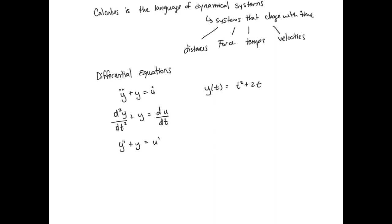If we evaluate this for a specific moment in time, we'd have something like y(1) = 1² + 2×1, so y equals 3 when time equals 1. Maybe y is representing a distance or something. When you see double-dots, that automatically means you're taking the derivative with respect to time. So dy/dt equals y-dot. But if you have dy/dx, you would not denote it with a y-dot — you'd denote it as y-prime.